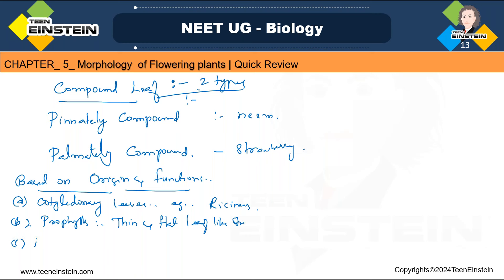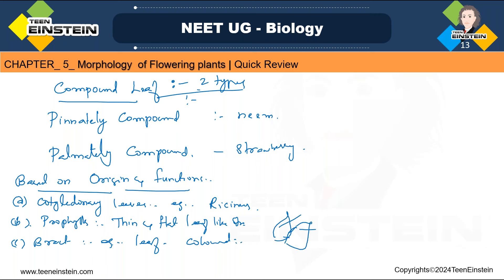Third type is bract leaf — here the leaves become colored, like a flower. Example: in Bougainvillea and Euphorbia, you can see the leaf is actually colored. In Bougainvillea, the colorful part — pink, orange, white — those petal-like structures are actually colored leaves. Bougainvillea's actual flower is white and very small. That colored leaf is called bract leaf.